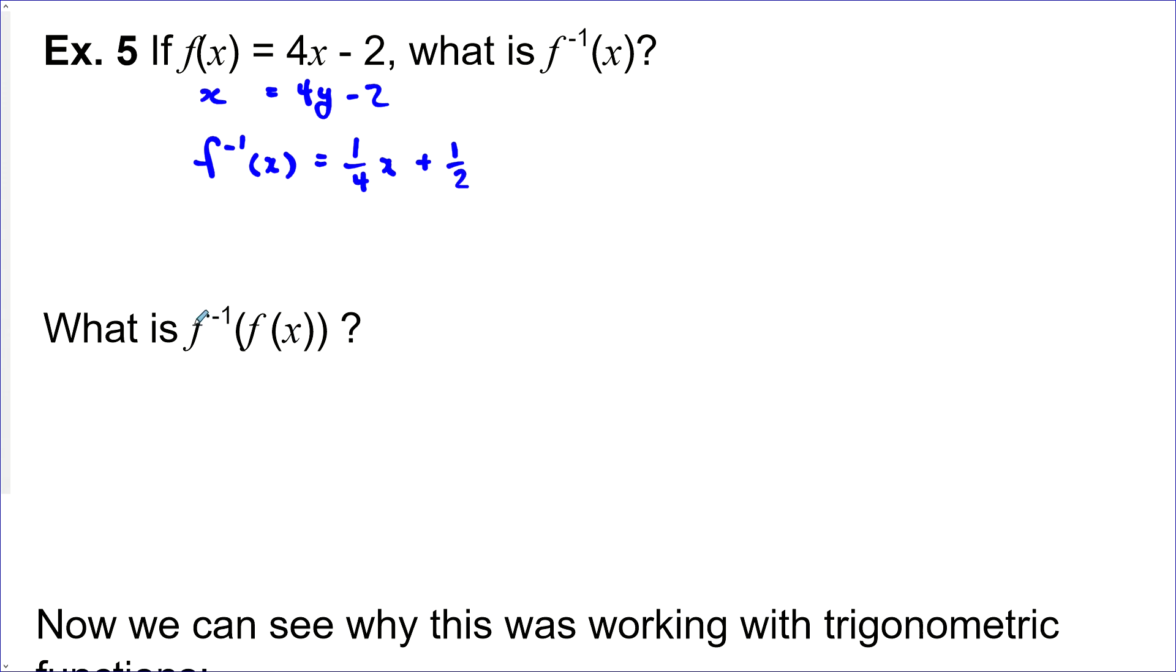Now let's do a composite function. It means we're going to put this function inside of the inverse function. So wherever we see an x here, we're going to replace it with 4x minus 2, this whole function here. So we're sticking the whole function inside of the inverse. And so that would be 4x minus 2 in there.